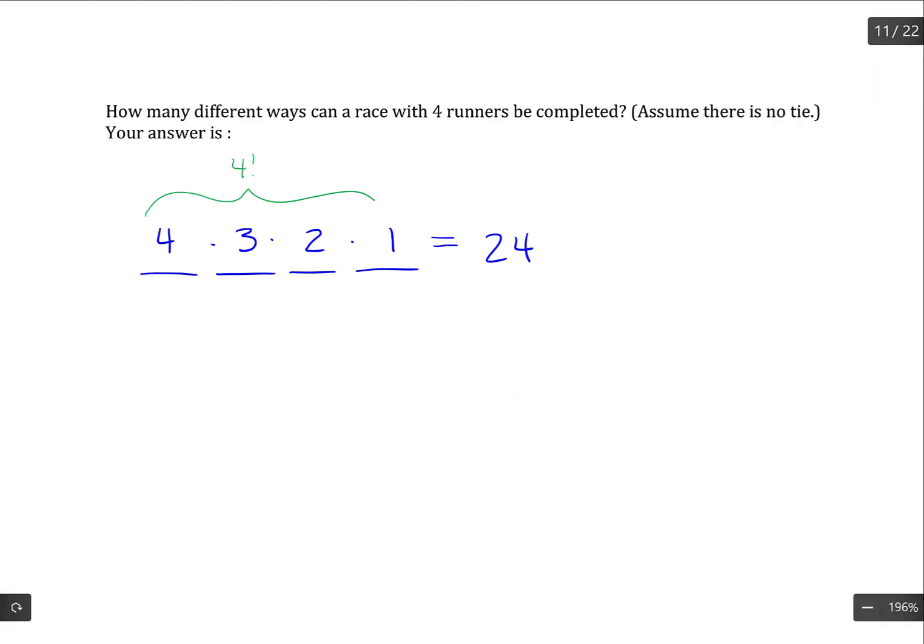Another way to think of it is as a permutation. In the case of a permutation, we have a single group of items and we're picking multiple items out of that group. Order would matter because someone's going to be first, second, third, and fourth.